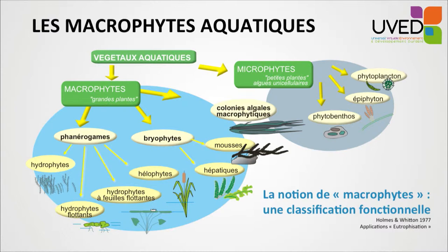Macrophytes include phanerogams — for instance, the plants with flowers. Some of them are totally emergent, some are floating or have floating leaves, and some have their roots in the substrate but leaves outside the water; these are called helophytes.